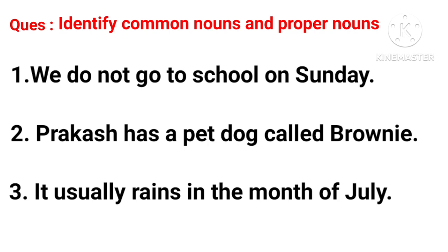First sentence: 'We do not go to school on Sunday.' First, identify the nouns. There are two nouns in this sentence: school and Sunday. School is a common noun because we are not talking about any particular school — it is used for any school. Sunday is a proper noun because we are talking about a particular day.